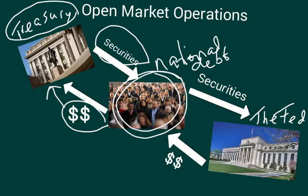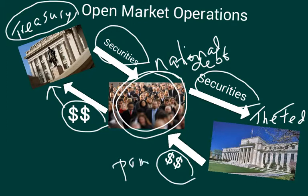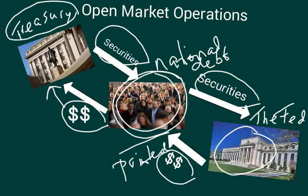Here's where the Fed comes in. The Fed says: if we buy these securities from the public — a day, a month, or a year later — and we print money, that purely printed money goes to the public while the securities end up in the hands of the Fed, at the Federal Reserve. That newly printed money now ends up in the hands of the public, which increases the money supply.